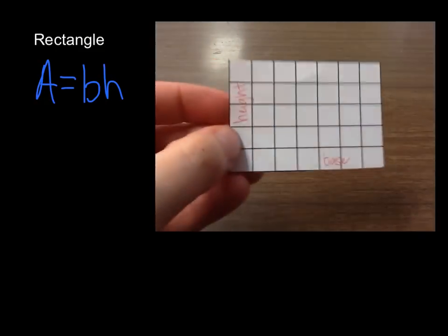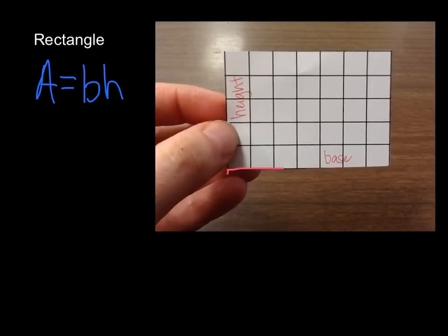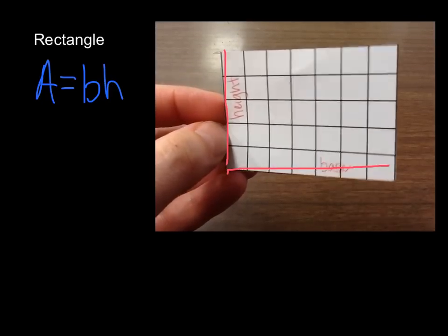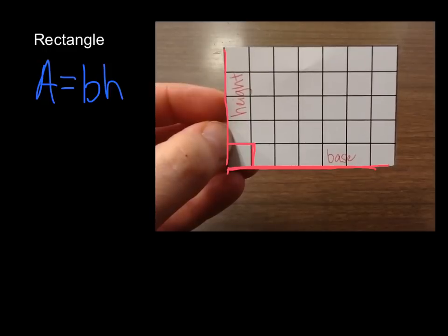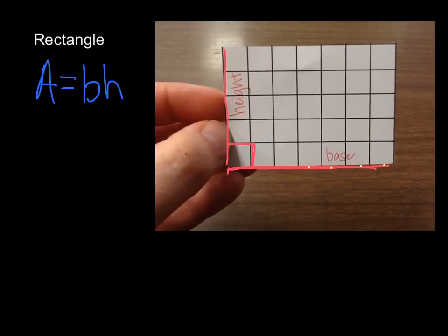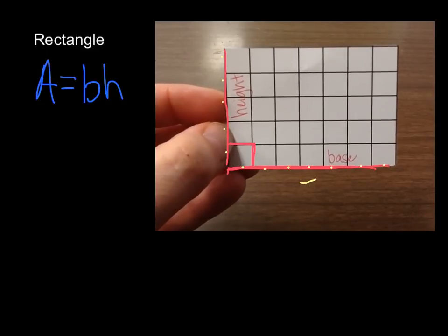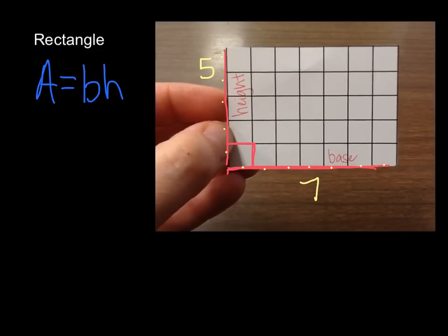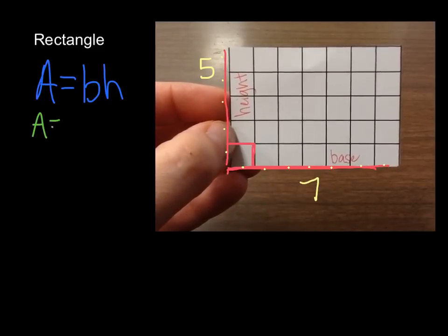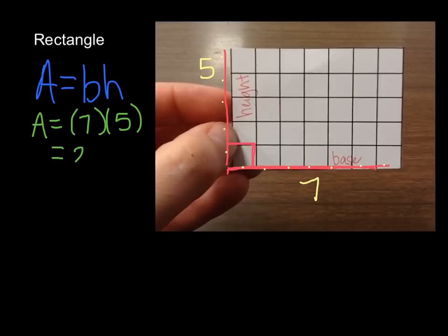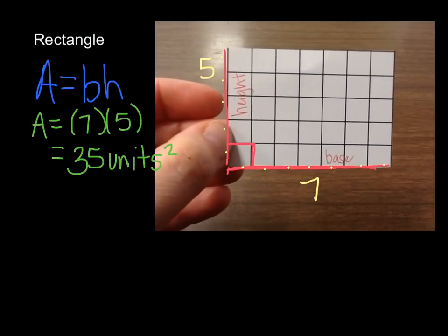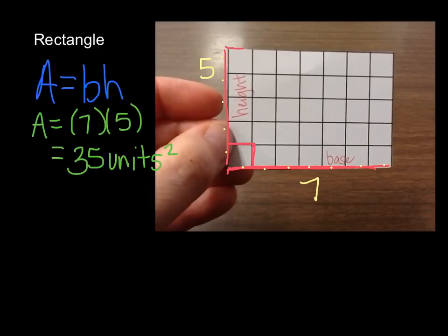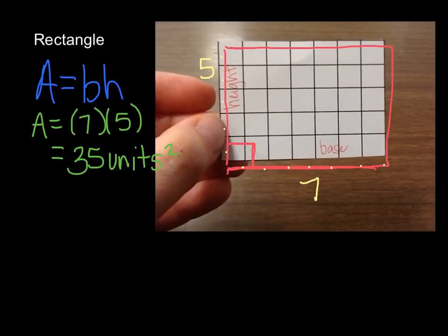Now write down rectangle. The formula for a rectangle's area is base times height again. Draw the outline of this rectangle. Here is the base and here is the height — and again, why are we naming this base and height? We must have a right angle. The base measures 7 units and the height measures 5 units, so 7 by 5. Plug it into the formula: area equals 7 times 5, so there are 35 square units in this rectangle. Also a pretty easy shape to find the area of.